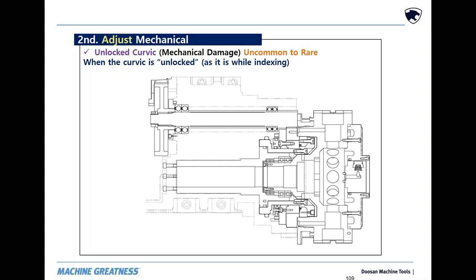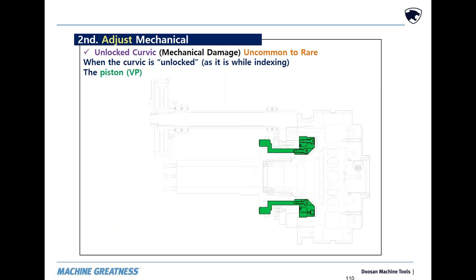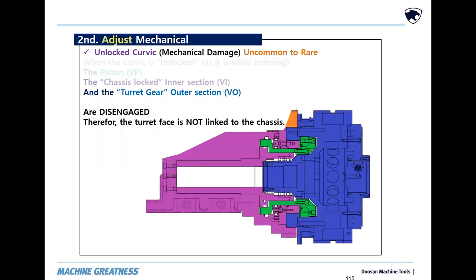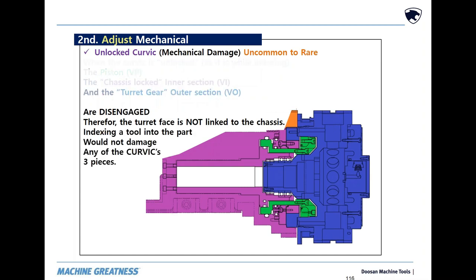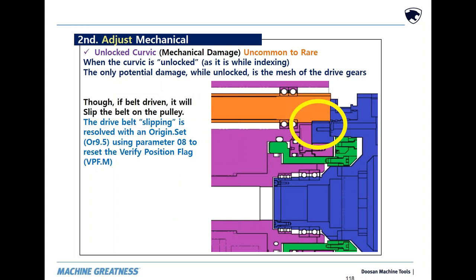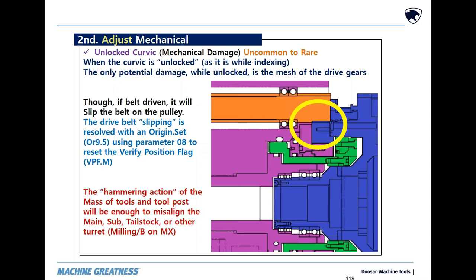We are at indexing a turret into a part or bar stock. The Kervik piston's only function is to lock or unlock the stationary ring to the rotating ring. When they are disengaged, the turret and tool post are not linked. The turret index moving then stopping into a part or bar stock would never transfer those forces into the tool post body. The drive gears might take some damage, and more than likely a belt-driven turret would skip teeth on the belt's pulley, resulting in the need to redo the location of VPF.M with an origin set. The turret's mass and speed would be enough that spindles could get knocked into taper.